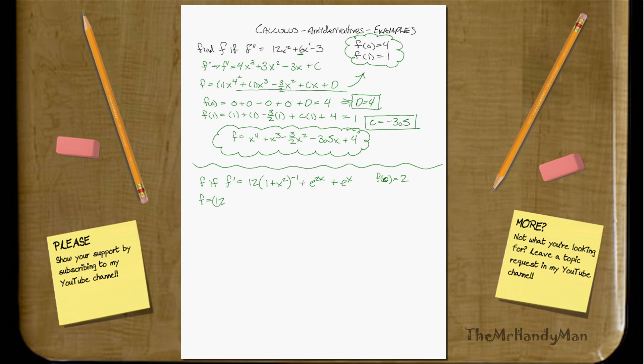Pull the constant out, right? So you're just going to have your 12. And then you just do this one, which, that's 1 over, that'll be 1/(1 + x²), right? Plus, e^(2x) + eˣ. Don't mix them up. So now, you're going to solve for your f.